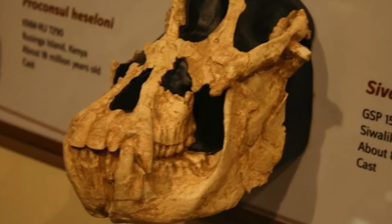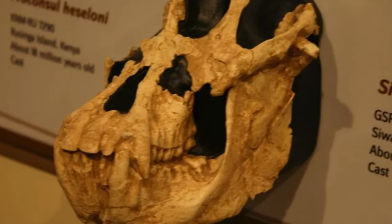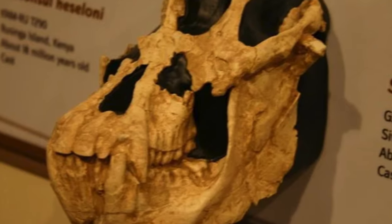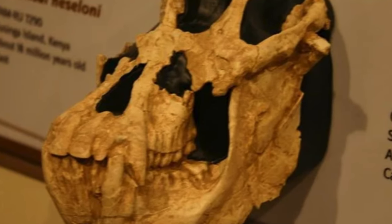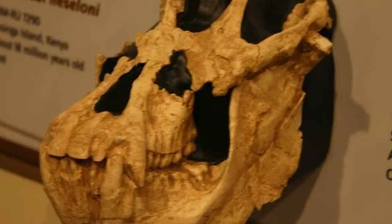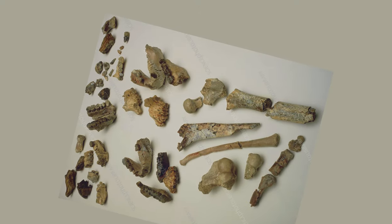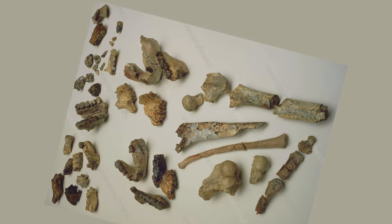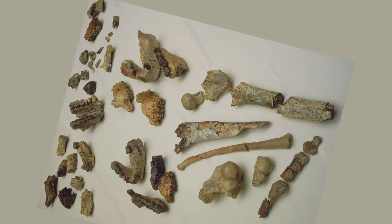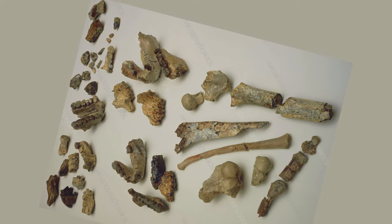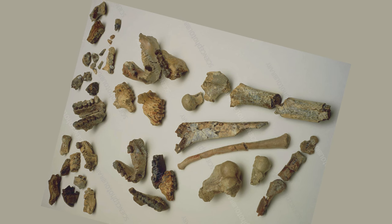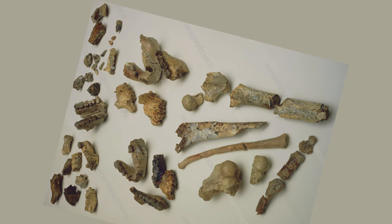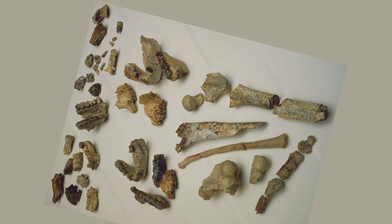This view changed with new fossil discoveries and re-evaluation, and Ramapithecus was merged with Shivapithecus. Various fossils of Shivapithecus have been found, including parts of the face, jaw fragments, individual teeth, and many bones from the body.